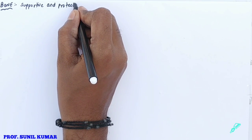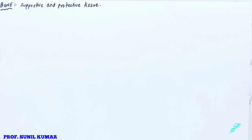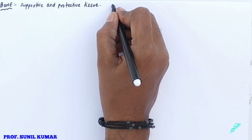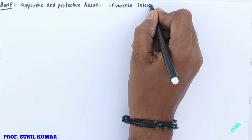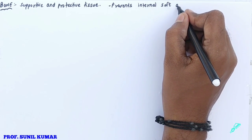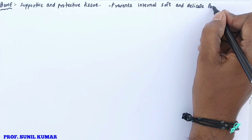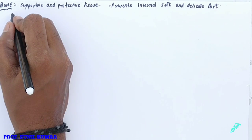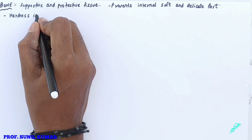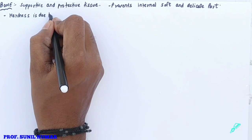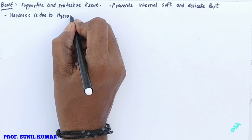Bone is a supportive and protective tissue. It provides protection to our body and prevents internal injury, as all the important and delicate organs are protected by the bone — what we normally call the skeleton. The bone is hard.